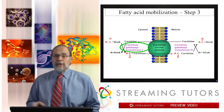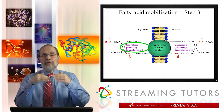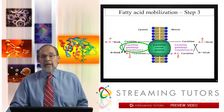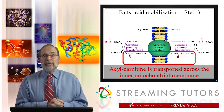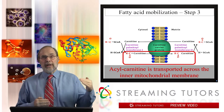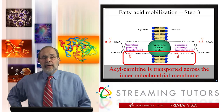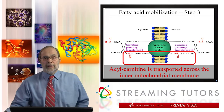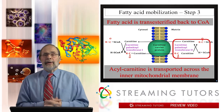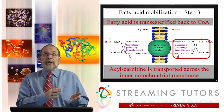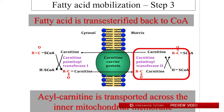Mitochondria have a specific transporter system for acyl-carnitine. Carnitine-palmitoyl transferase transfers the fatty acid from CoA to carnitine, creating acyl-carnitine. A transporter — an antiporter — then exchanges acyl-carnitine going in for free carnitine coming out. There is then a mitochondrial carnitine-palmitoyl transferase that catalyzes the energetically neutral reverse reaction, transferring the acyl group from carnitine back onto CoA inside the mitochondrion, creating free carnitine to exit and complete the cycle. A second isoform of the enzyme catalyzes this reaction.